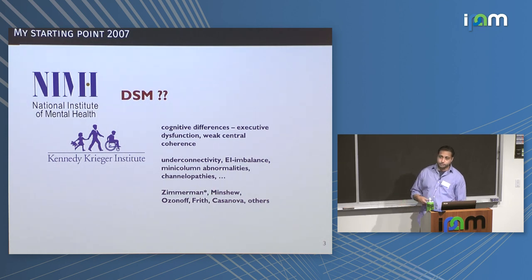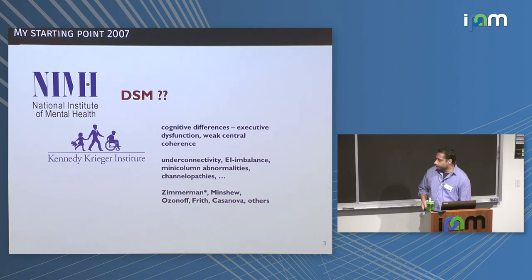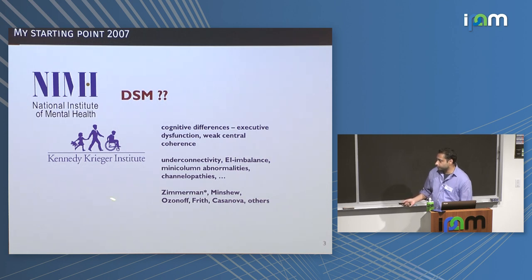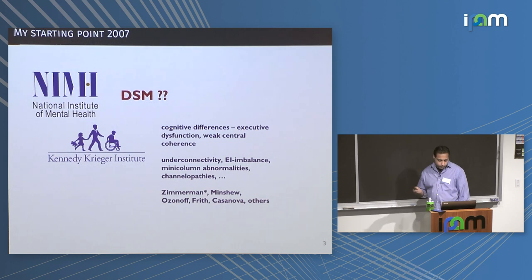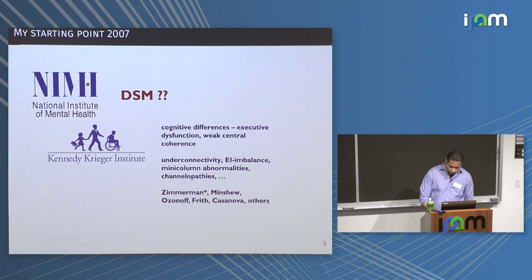There were also channelopathies — from protein expression studies showing abnormalities in expression levels of certain GABA channels. Daniel Geschwind was doing genetic studies with certain abnormalities in GABA. I was also influenced by psychophysics work that Nancy Minshew was doing, and Casanova again. I happened to be working with a great clinician at KKI, Andrew Zimmerman, who was working with Casanova trying to figure out how mini-column abnormalities could manifest in autism symptoms. That's where I started from.